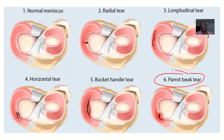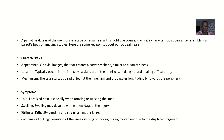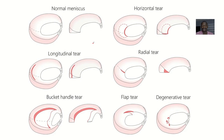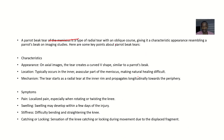This is how a parrot-beak tear of the knee meniscus will look like. A parrot-beak tear of the meniscus is a type of radial tear — it looks like a radial tear but it's kind of different. It's a type of radial tear with an oblique component, giving it a characteristic appearance that resembles the beak of a parrot on imaging studies.